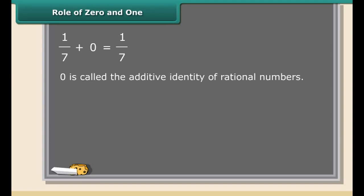Here we have added zero to a rational number. What did you notice? When we add zero to a rational number, the sum is always again that rational number. For this reason, zero is called the additive identity of rational numbers.